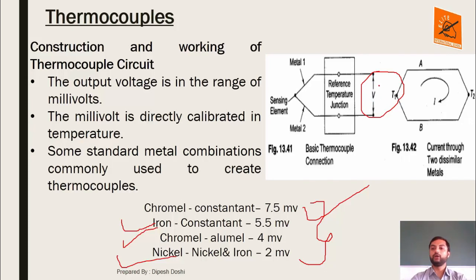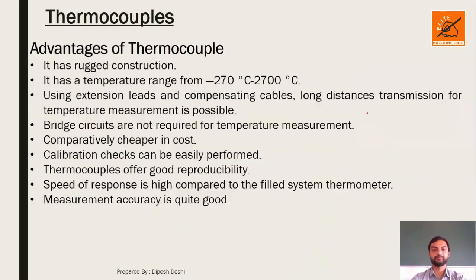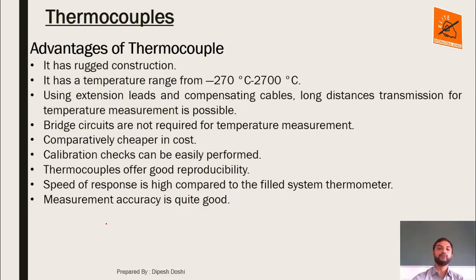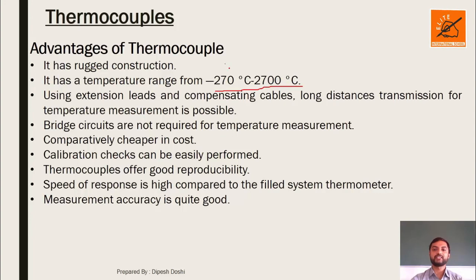Certain wire combinations are used for thermocouples: Chromel-Constantan produces 7.5 mV, Iron-Constantan produces 5.5 mV, Chromel-Alumel produces 4 mV, and Nickel-Nickel Iron produces 2 mV. The voltmeter used is directly calibrated to measure temperature, and it is a millivolt meter since the produced voltage is in millivolts. This voltage is calibrated in terms of temperature.